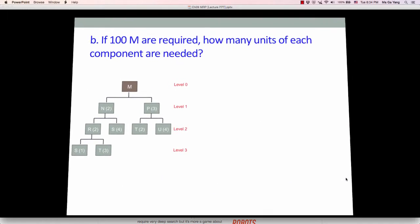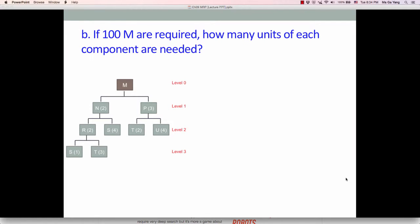Now, think about if 100M are required, how many units of each component are needed? For example, if you know the demand of end item M, how many components and parts are required? We have to calculate based on this BOM. So suppose we know 100M are required. And starting with N and P, N requires 2M and P requires 3M. Based on this BOM structure, 2 times 100 is 200N. 3 times 100 is 300P. So in order to produce 100M, 200N and 300P should be produced before producing 100M.